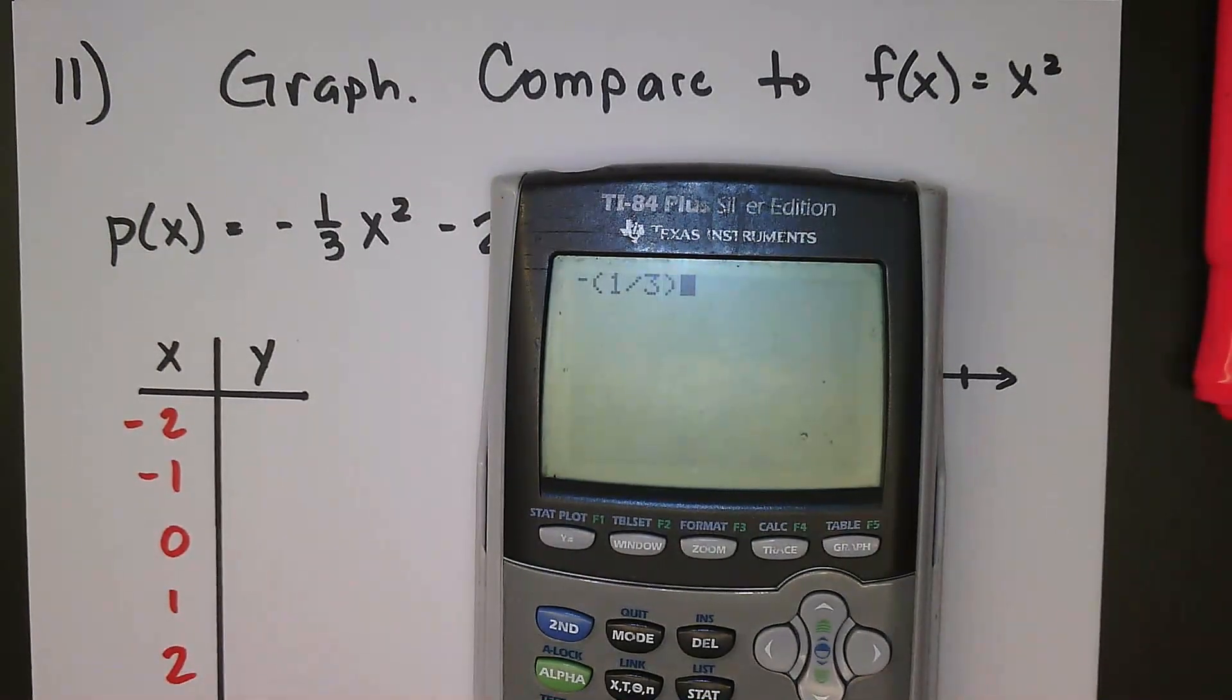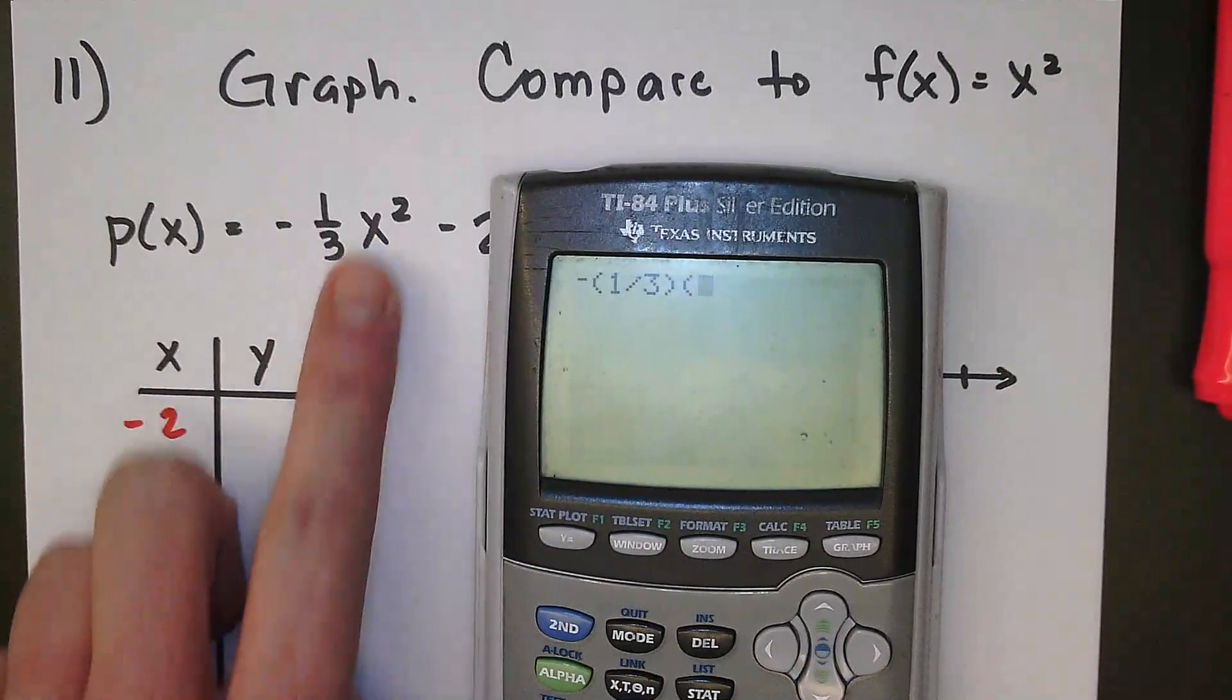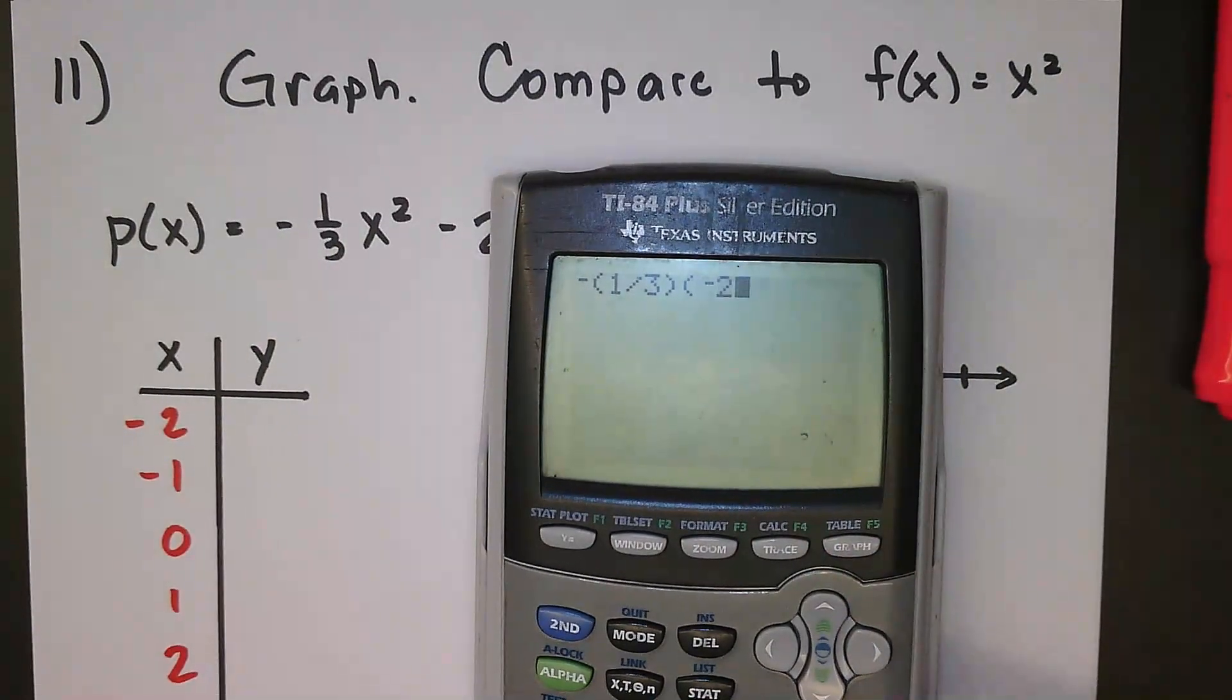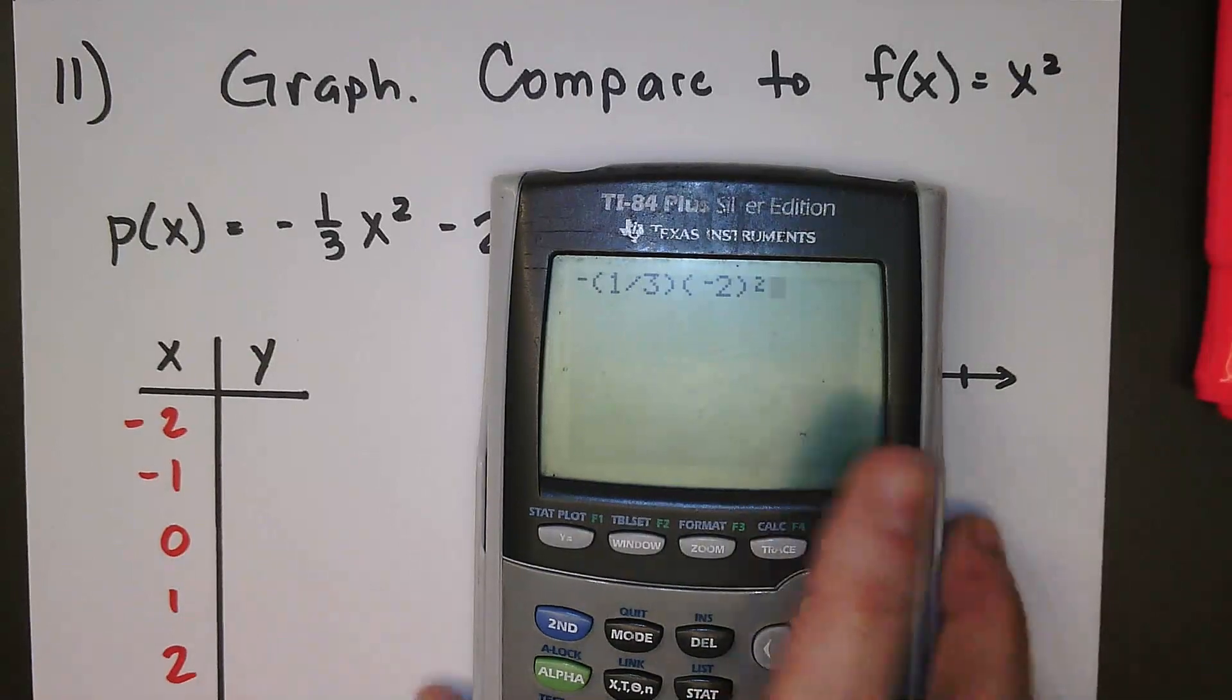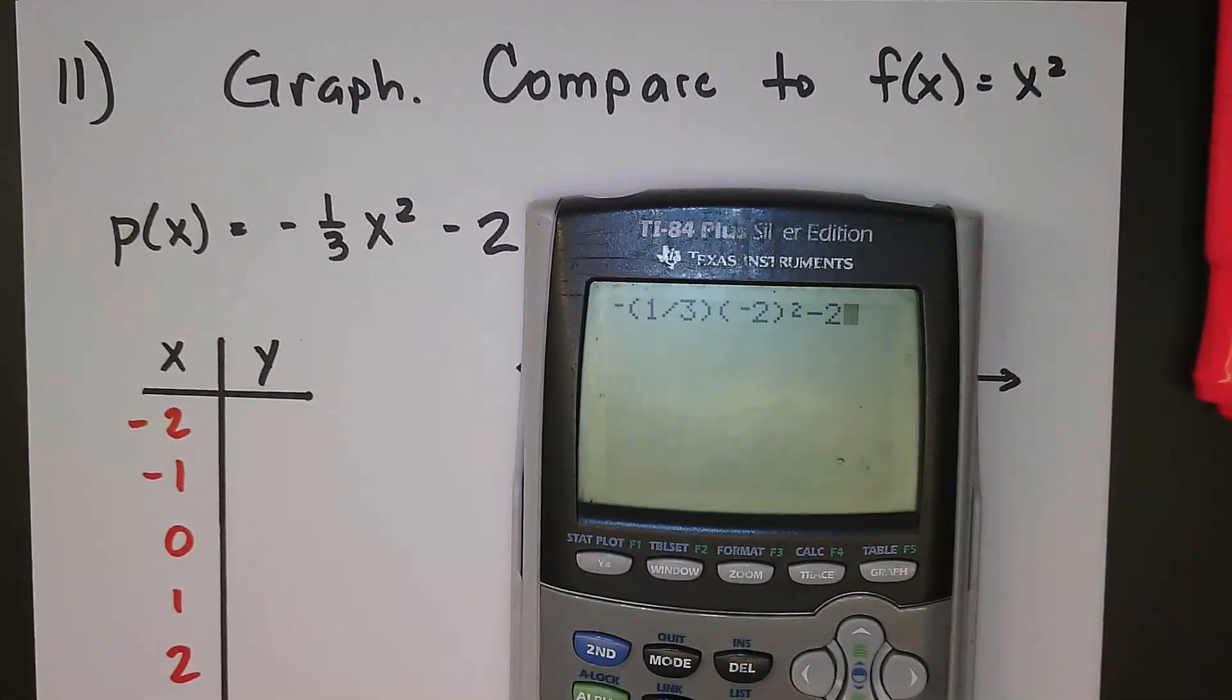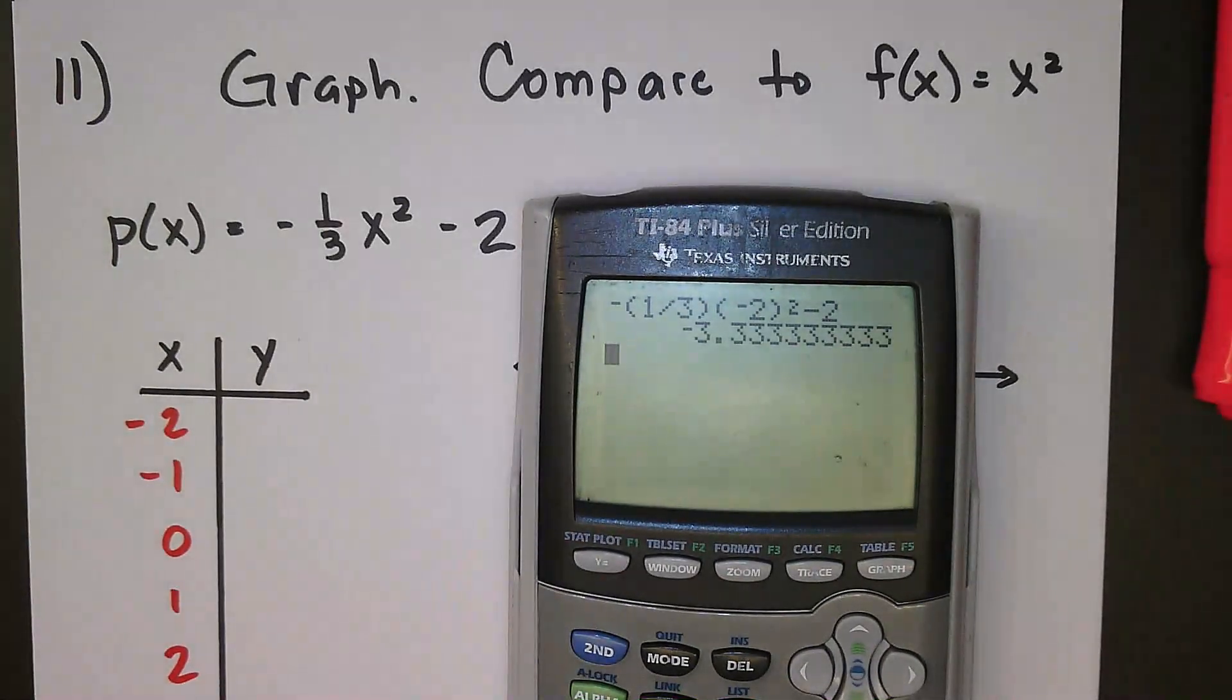Sometimes you need parentheses around your fraction, sometimes you don't, but if you always put the parentheses there, you don't have to worry about the rule for when you need it or don't. Just always put them there. So this is my negative one-third. I'm going to input an x square, so I'm going to put that in parentheses, so it's negative two and that is getting squared, and then I'm subtracting two at the end.